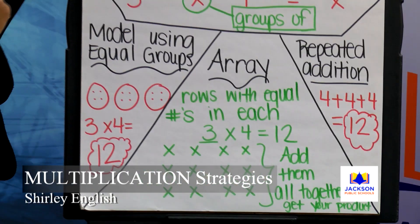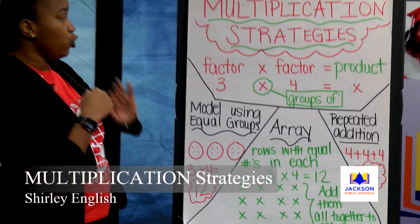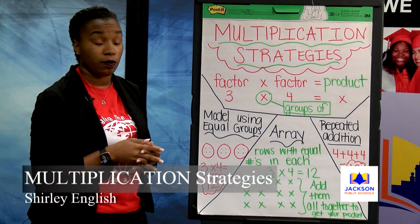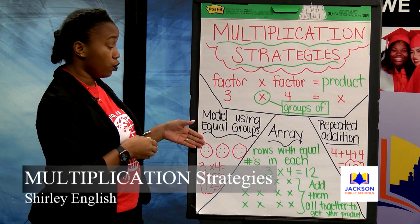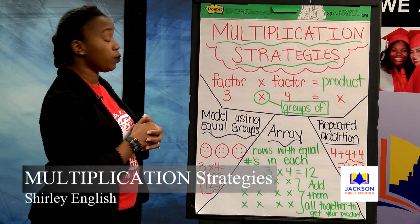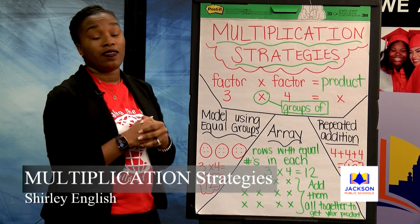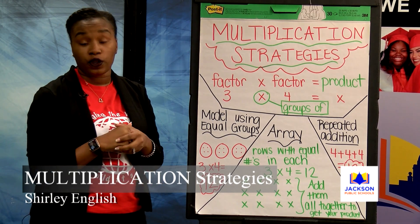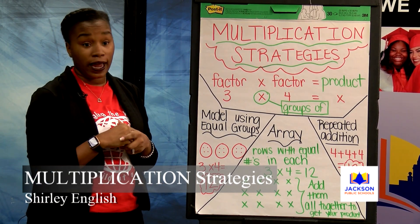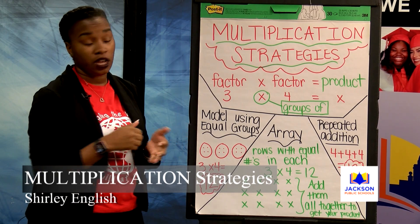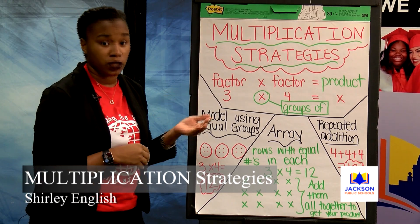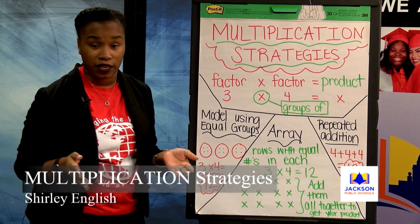Going back over the strategies: when you want to express how to multiply two numbers, you can use a model, you can use an array, or you can use repeated addition. Remember that for third, fourth, and fifth grade, you will be required at times to write about how you got your answer using your strategy. So it's not always about knowing that three times four is twelve, but how did you get that answer?